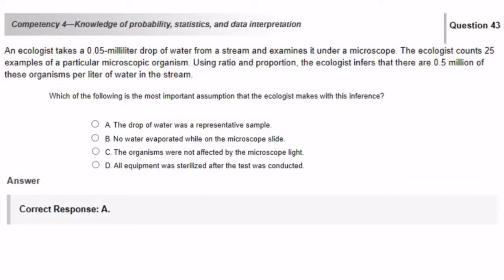An ecologist takes a 0.05 milliliter drop of water from a stream and examines it under a microscope. The ecologist counts 25 examples of a particular microscopic organism. Using ratio and proportion, the ecologist infers that there are 0.5 million of these organisms per liter of water in the stream. Which of the following is the most important assumption that the ecologist makes with this inference? To infer is to base your conclusion off facts or evidence. We know that A is going to be our answer, but let's look at why B, C, and D are not our answers.